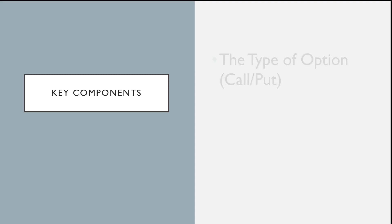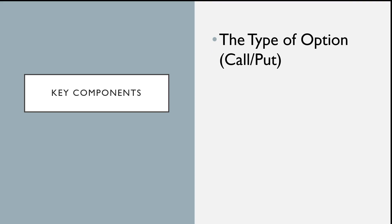There are only two types of options: calls and puts. If you are the buyer of a call option, you have the option to buy an asset at a set price. If you own a put, you have the option to sell that underlying asset at the strike price. Another key component is the option price — that's what the option buyer pays, or what the option seller receives as a credit.